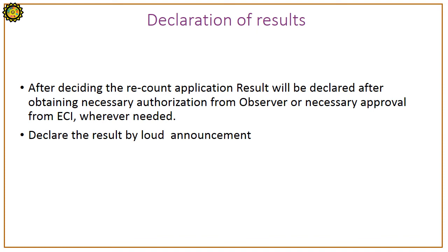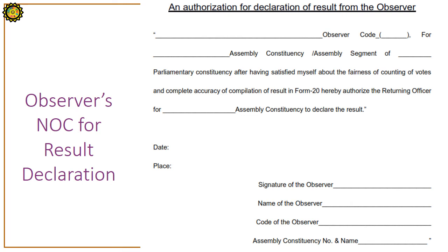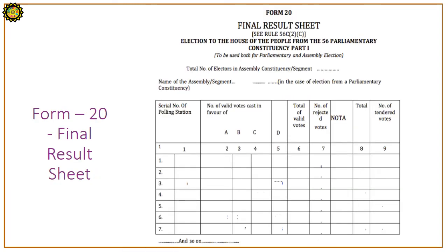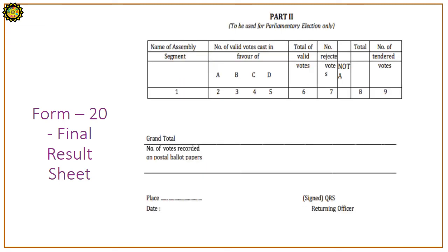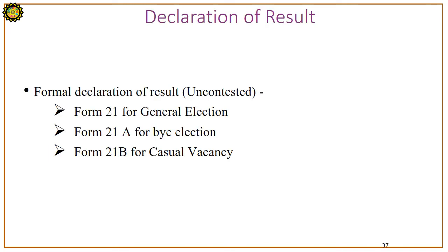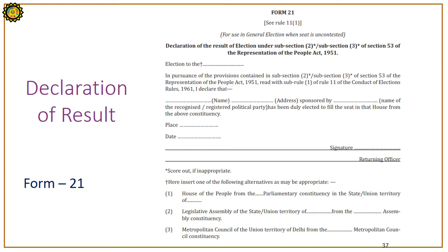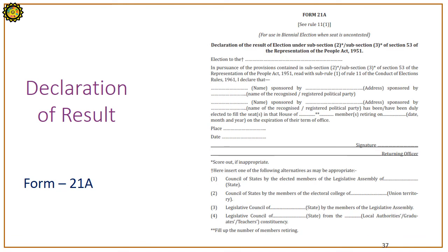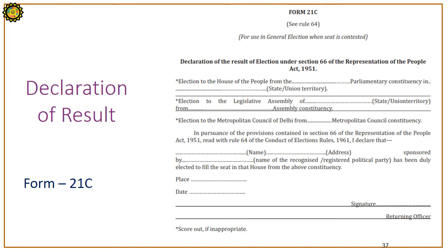The result is declared by loud announcement. A sample of the observer's authorization for result declaration is shown on screen, along with the final result sheet Form 20 (both parts). If the election is uncontested in any constituency, the formal declaration of result will be done as per Form 21 for general elections, Form 21A for by-elections, and Form 21B for casual vacancies. Samples of Forms 21, 21A, and 21C are shown on screen.